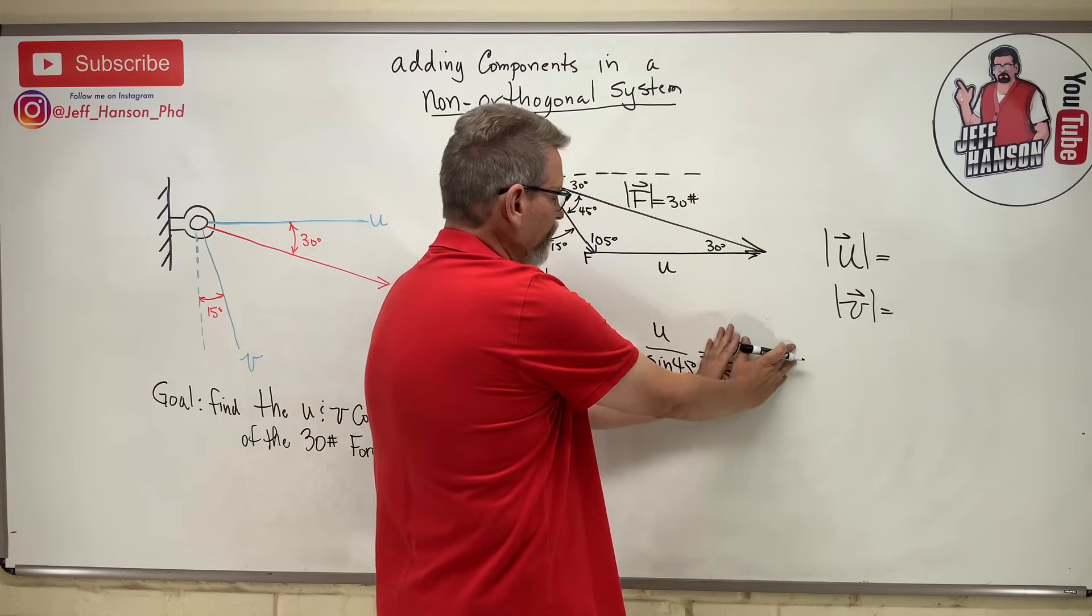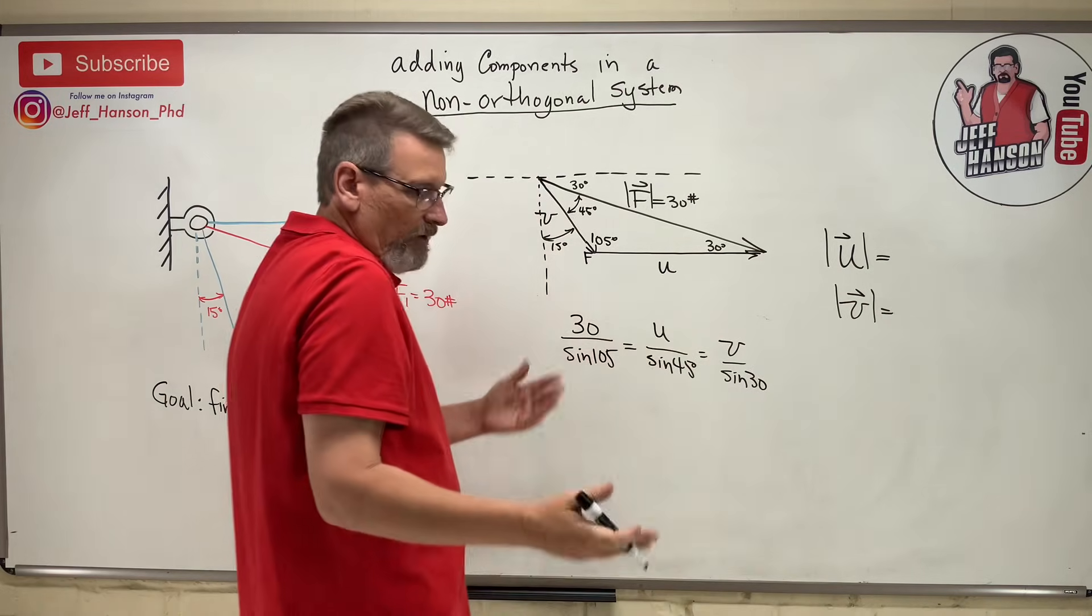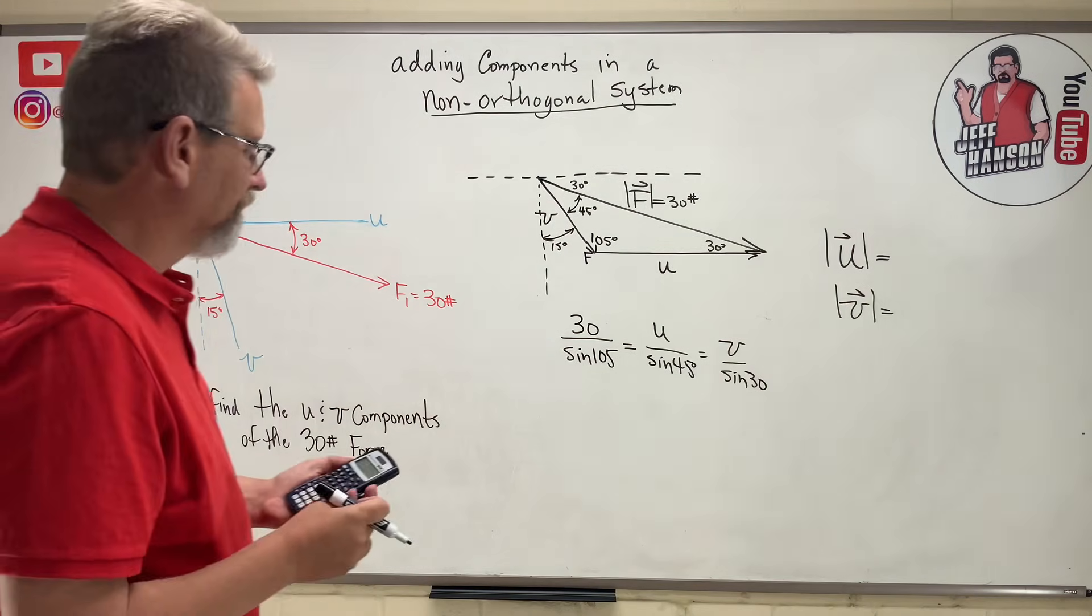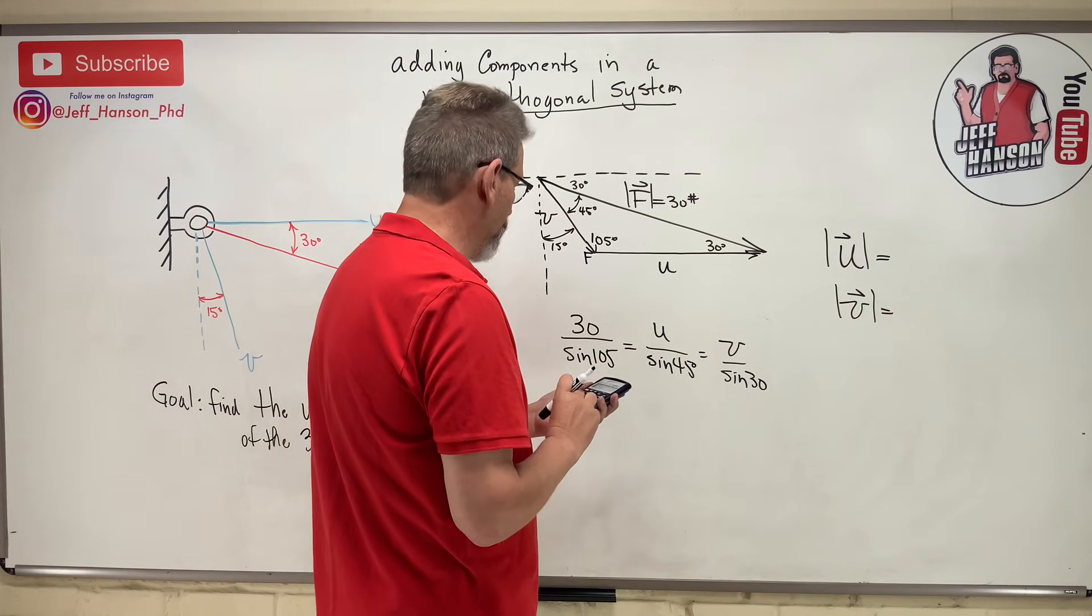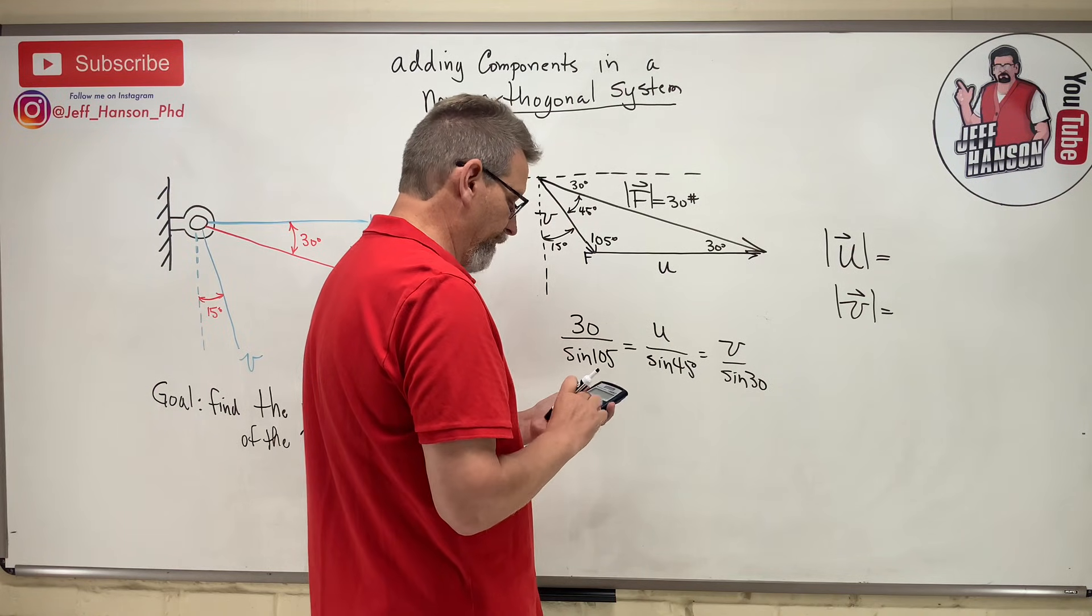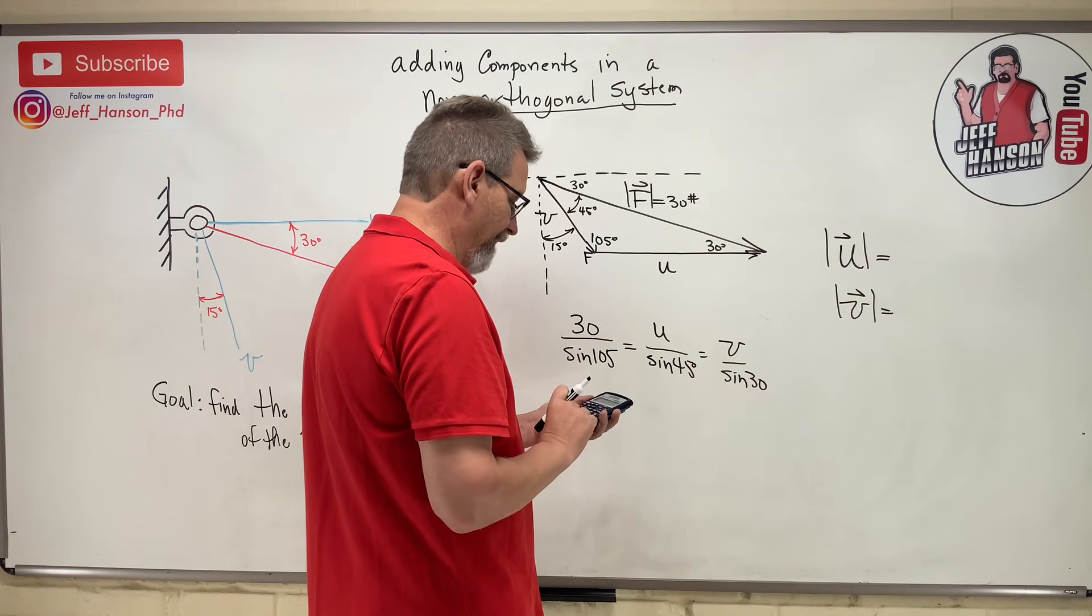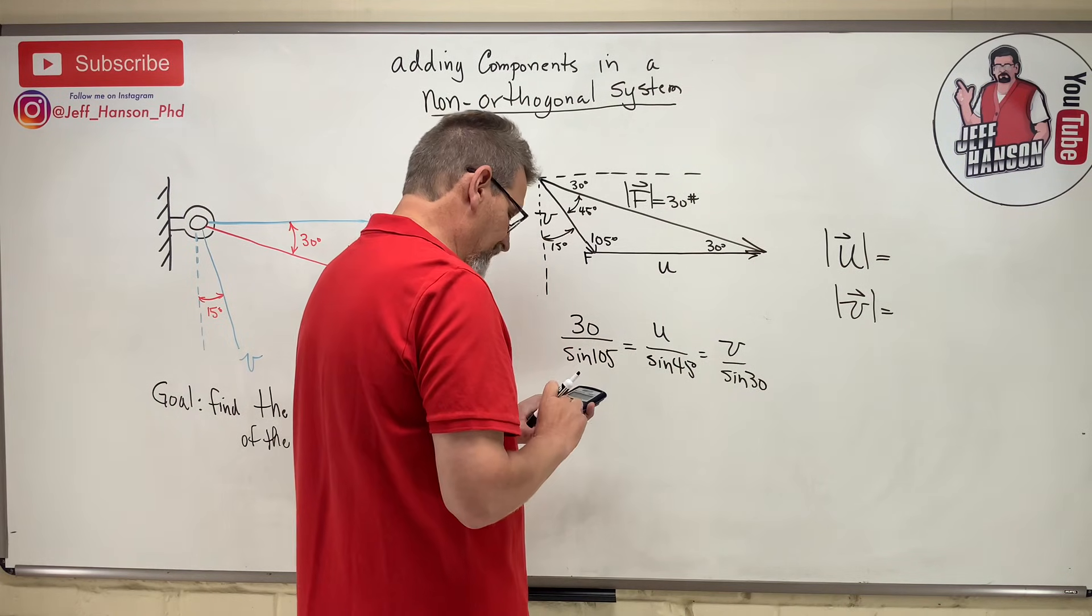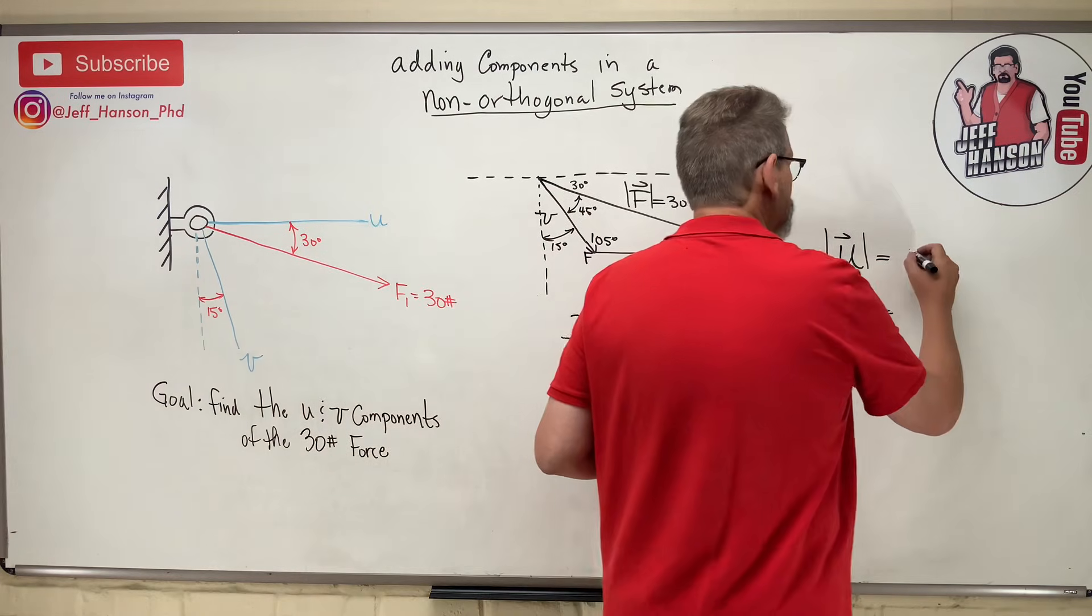Then when I want V I just ignore this guy. Look, I've got a nice little ratio to solve, so it's easy. All I need to do is find my calculator. Okay, I'm gonna do U first. How about 30 divided by the sine of 105 - no, I put 102 in my calculator. 30 divided by the sine of 105, that's 31.58, and then multiply 0.707 times that, which equals 21.96. So U is 21.96 pounds.